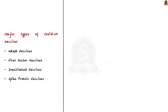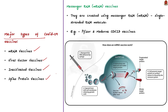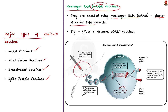Vaccines are categorized on the basis of the development process adopted by scientists. There are mRNA vaccines, viral vector vaccines, inactivated vaccines, and spike protein vaccines. Messenger RNA vaccines, shortly called mRNA vaccines, are created using messenger RNA — a single-stranded RNA molecule. They work by introducing a piece of mRNA into the human body, allowing cells to produce the viral protein. The immune system then recognizes the protein and produces antibodies to attack them. These antibodies in turn help protect the body when the original infection happens.